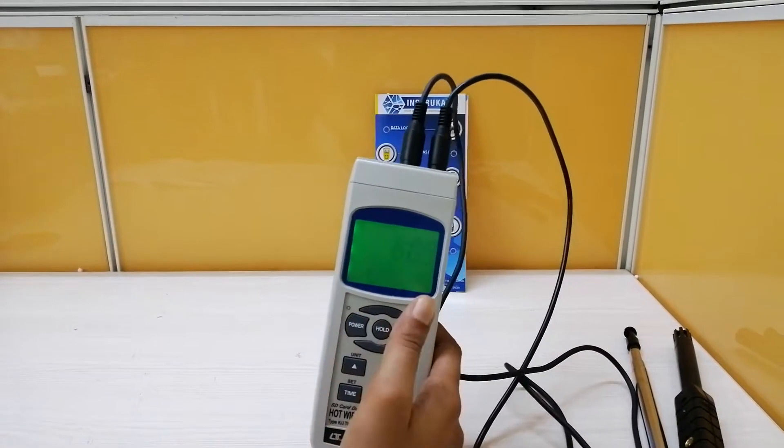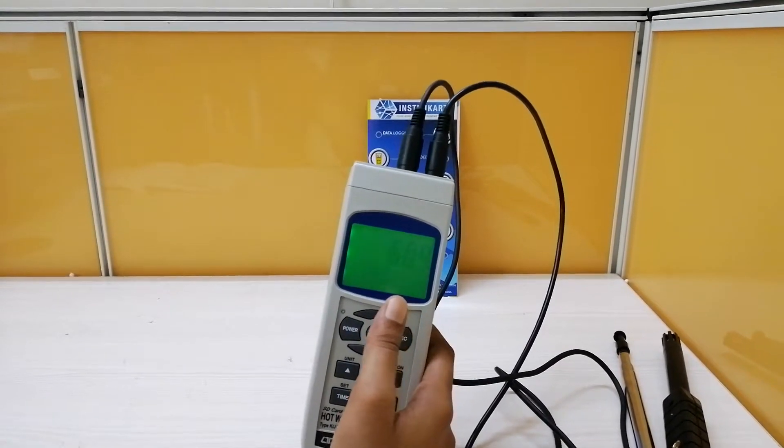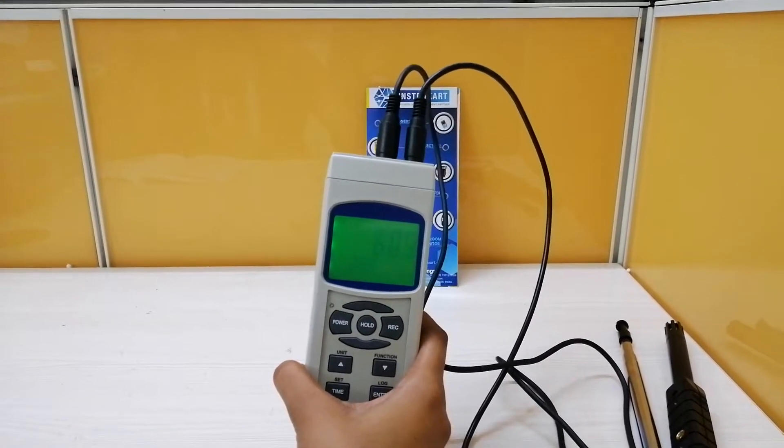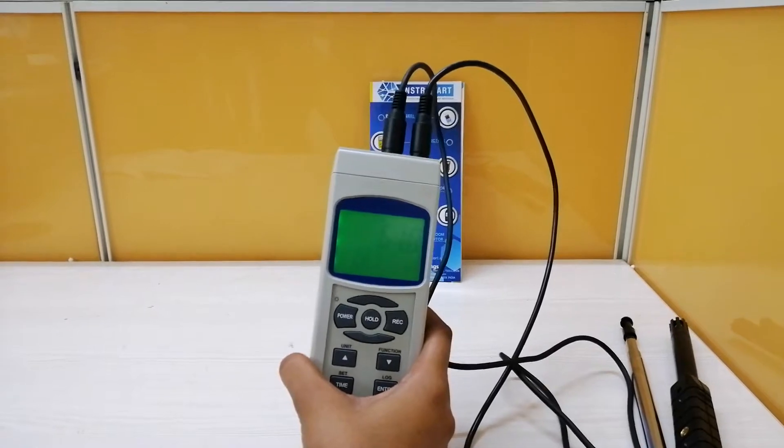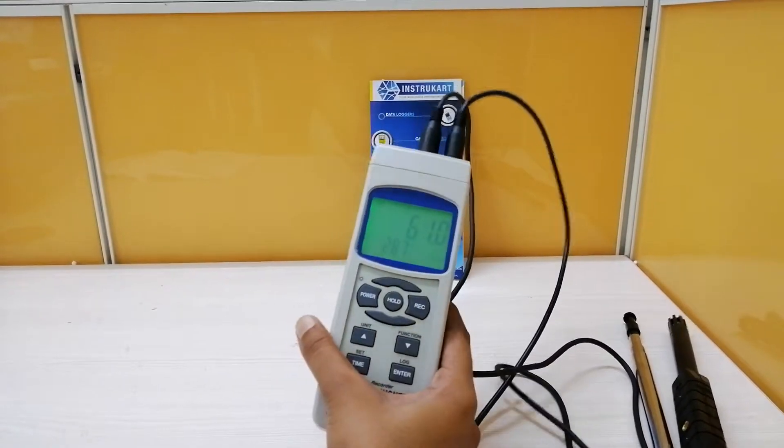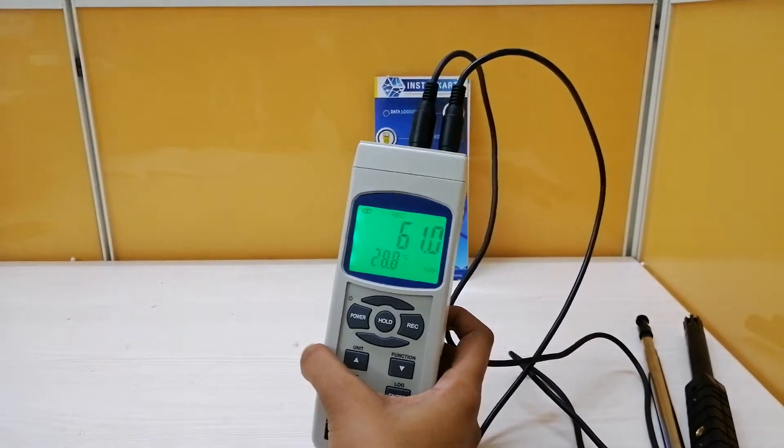It has a sampling time of one second to 3600 seconds, and you can insert the SD card with a capacity of 1 GB to 16 GB.